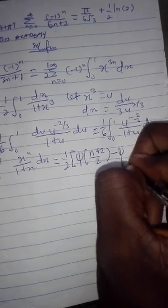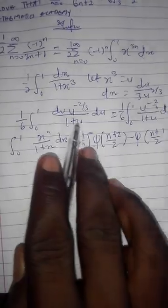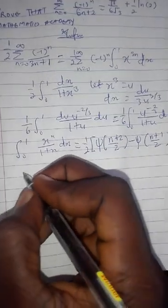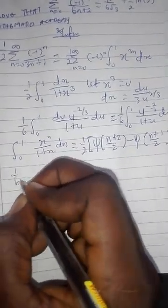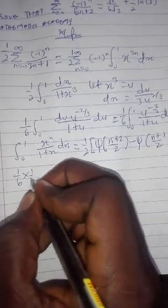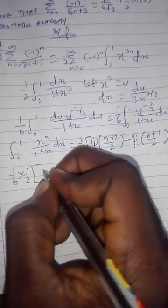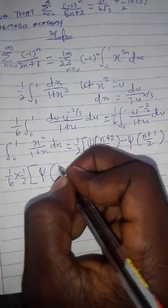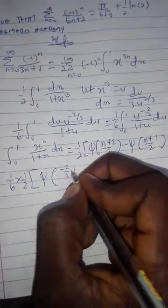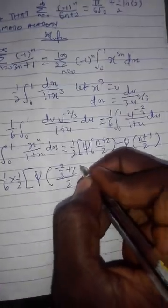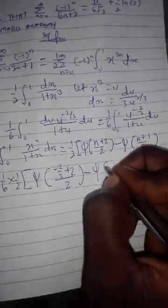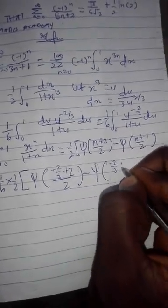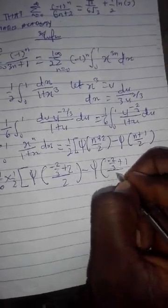Here our n is minus 2 over 3, so I have 1 over 6 times 1 over 2 times bracket digamma of (minus 2 over 3 plus 2) over 2 minus digamma of (minus 2 over 3 plus 1) over 2.